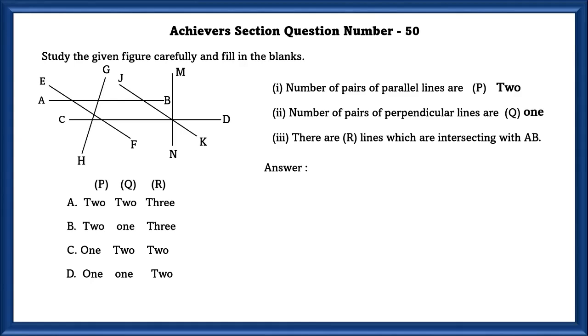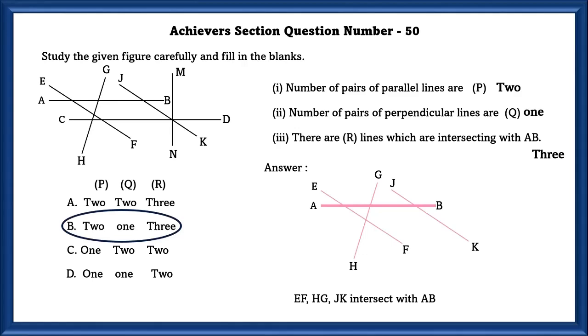There are R lines which are intersecting with AB. EF, HG, JK intersect with AB. So P is equal to 2, Q is equal to 1, and R is equal to 3. That is the B option.